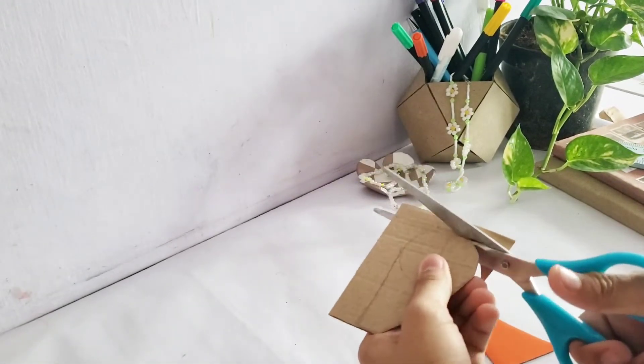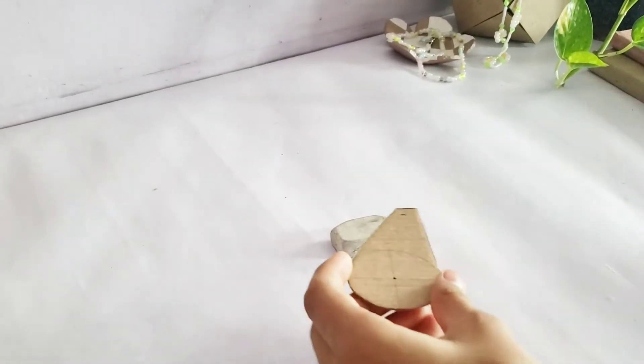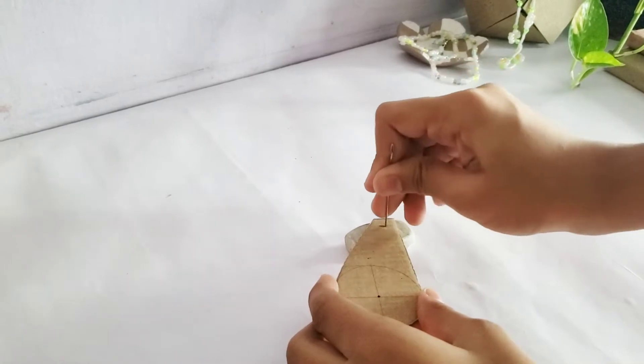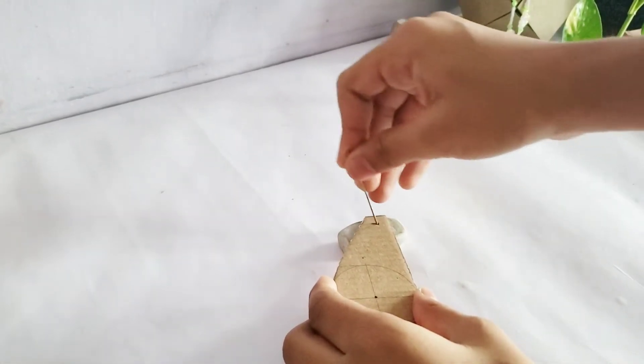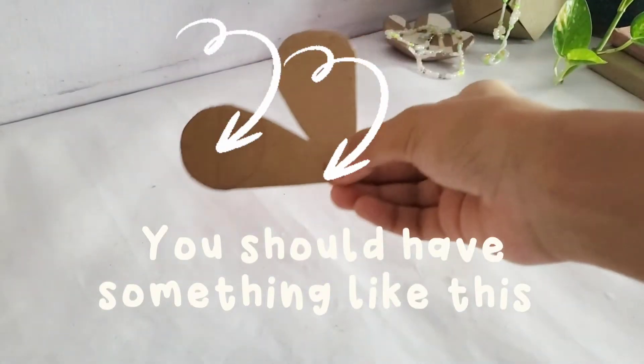Once you're done marking, cut it out and make another one. Now, poke holes in the center and right about here where I'm poking. You should have something like this.